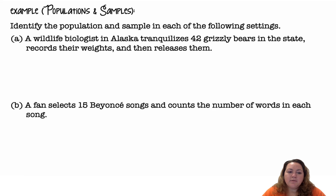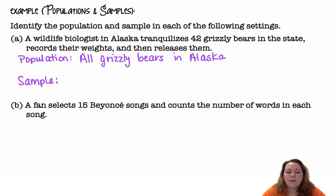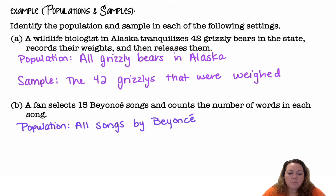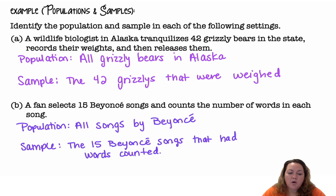Populations and samples — identify the population and the sample in each of the following settings. A wildlife biologist in Alaska tranquilizes 42 grizzly bears in the state, records their weights, and then releases them. The population would be all grizzly bears in Alaska; the sample is the 42 grizzlies that were weighed. Part B: a fan selects 15 Beyoncé songs and counts the number of words in each song. The population would be all songs by Beyoncé; the sample are the 15 Beyoncé songs that had the words counted.